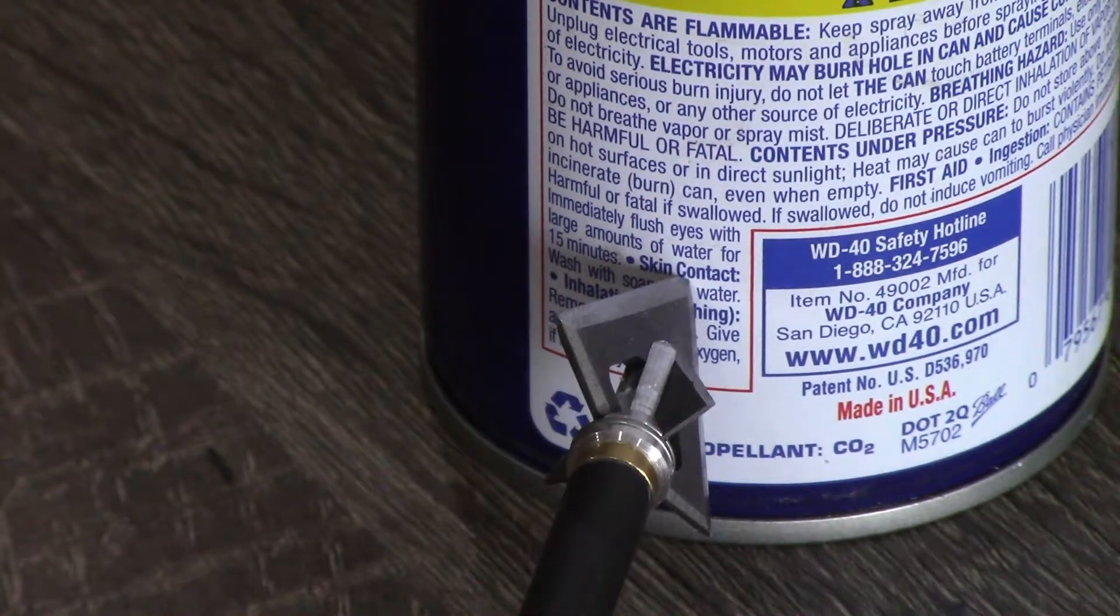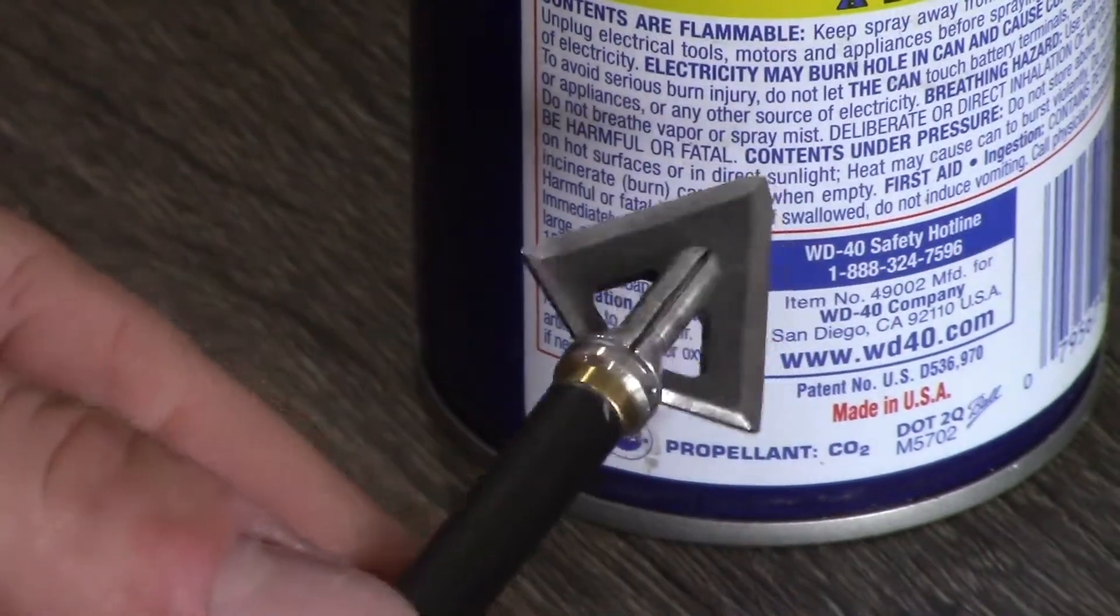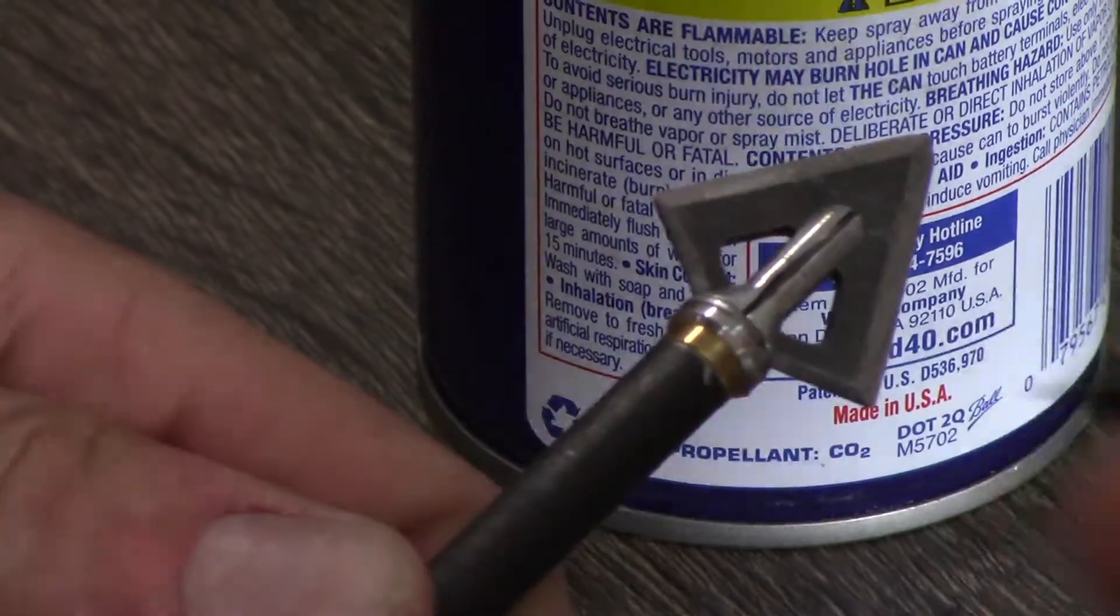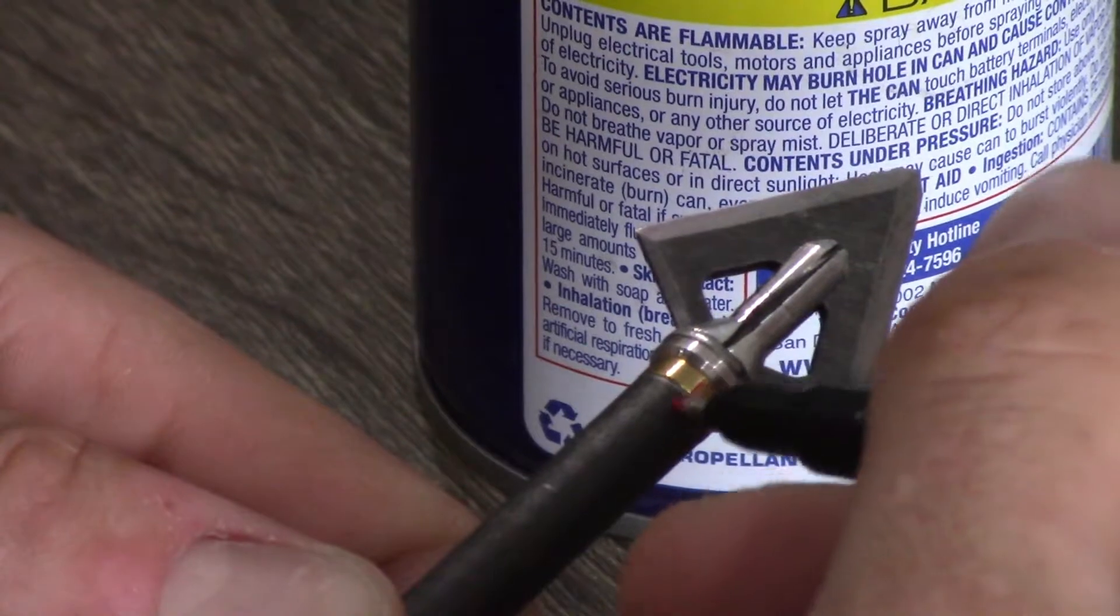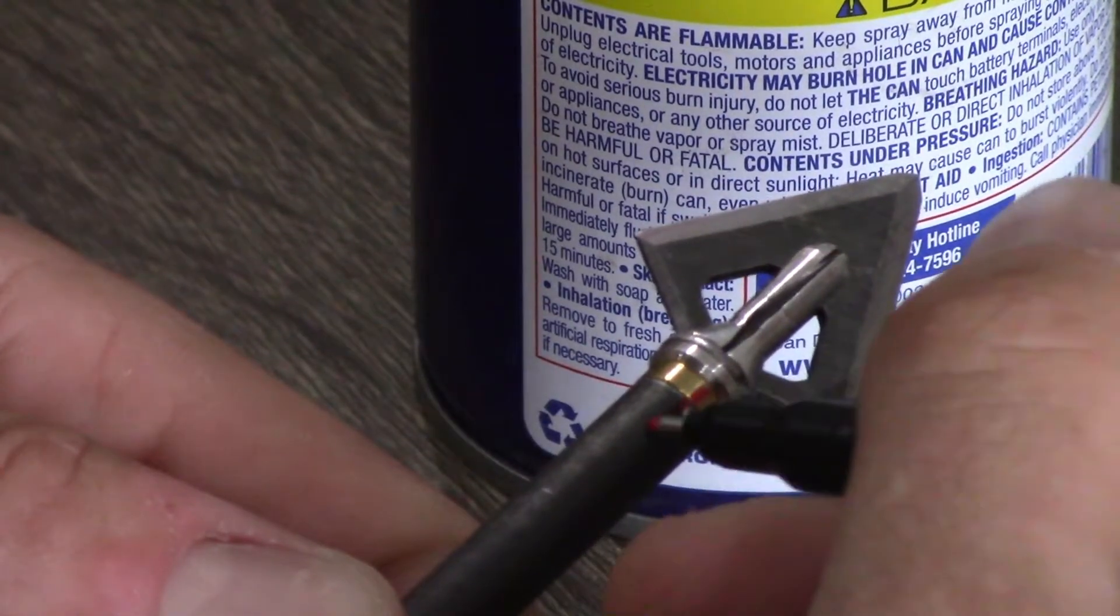Now, once I have the broadhead straight and where I want, I'm going to take a sharpie and I'm just going to mark the insert against the shaft. This is going to let me know where to align the insert once I glue it in.